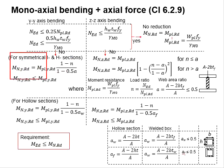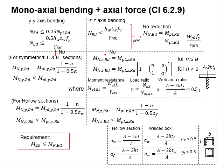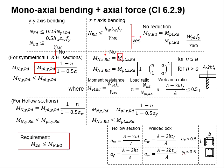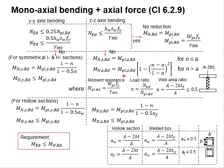The moment resistance for the YY axis and the ZZ axis differ. They are defined as a function of NNA, where N is the load ratio and A is the web area ratio. This represents the reduction factors as a function of NNA. MplYRd and MplZRd are the full bending moment capacity of the member without any reductions. The load factor N is computed as the ratio of the applied load to the axial capacity of the member, and the web area ratio A is the percentage of the web area over the total area of the member.